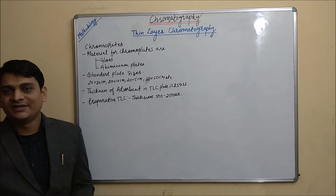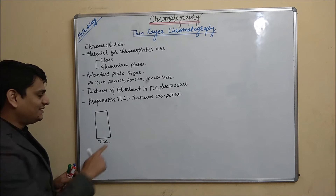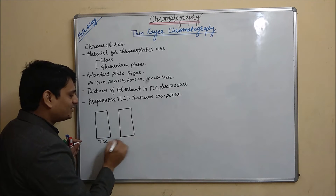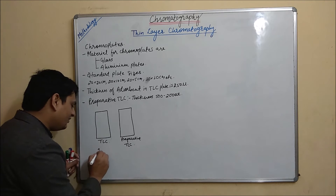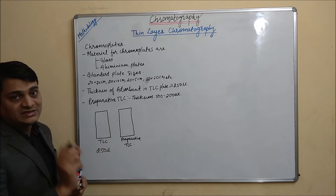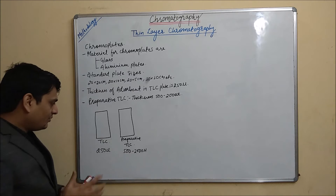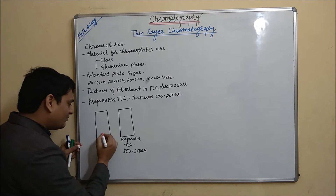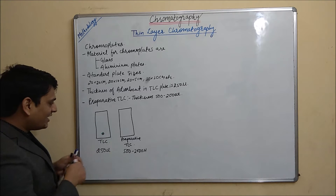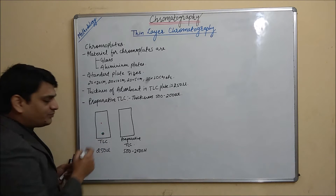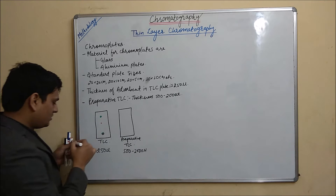What is preparative TLC and what is TLC? How are both different? In TLC, if there is a plate present like this, it is TLC. In preparative TLC, the same plate will be there but the thickness of the stationary phase will be greater — 500 to 2000μm. The spot of our sample will develop and separate out, giving two spots because two compounds are present — a red one and a green one.